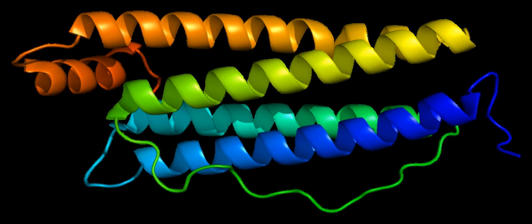Ferritin is the major intracellular iron storage protein in prokaryotes and eukaryotes. It is composed of 24 subunits of the heavy and light ferritin chains.